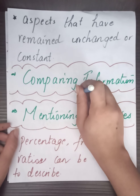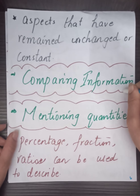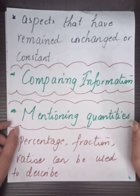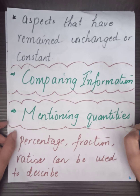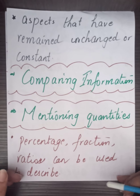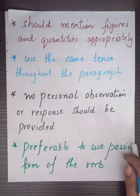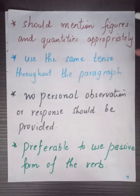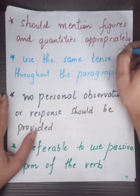After organizing your data, you are going to compare the information. After comparing, you are going to mention the quantities — that is, percentages, fractions, and ratios. You can use all these things to describe your analytical paragraph. When talking about quantities, mention the figures appropriately.